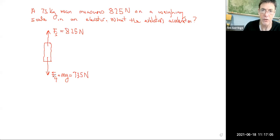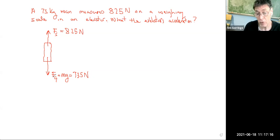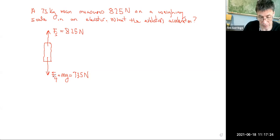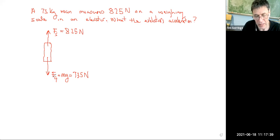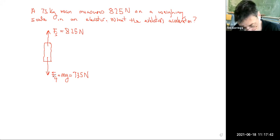You can see here that the force of the scales is a little larger — it's 825 newtons — than the force of gravity, which is 735 newtons. So there will be a net force that's upwards, and that's what's causing you to accelerate upwards as the elevator and the weighing scales also accelerate upwards. The way we're going to find the acceleration of the elevator is to find the net force on the man.